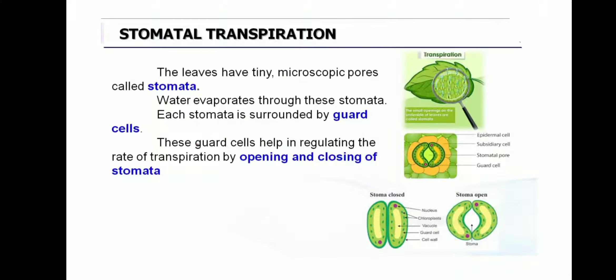The first type is stomatal transpiration. Stomata are the tiny openings in the leaf. The leaves have tiny, microscopic pores — holes that can be viewed only through a microscope. These very small holes are present in the lower part of the leaf, and that is what we call stomata. Water evaporates out through these stomata in the form of water vapor.